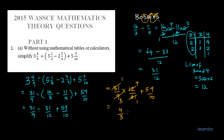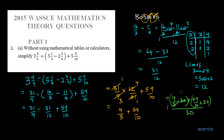Now we need to find the LCM of 3 and 10, which is 30. We multiply: 4 over 3 times 30, plus 59 over 10 times 30, all divided by 30. Since 3 goes into 30 ten times, we get 4 × 10 = 40. Since 10 goes into 30 three times, we get 59 × 3 = 177. So we have 40 plus 177 = 217, all over 30.